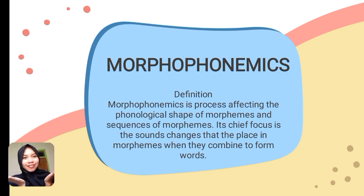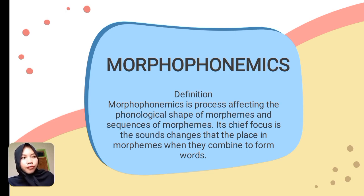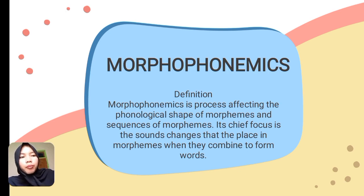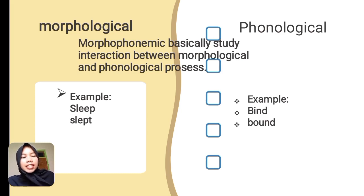What is morphophonemics? Morphophonemics is a process affecting the phonological shape of morphemes and sequences of morphemes. It is like the analysis and clarification of the phonological features which are affected by the pronunciations of morphemes, corresponding to morphophonological processes. We basically study the interactions between morphophonological and phonological processes and how these features affect each other.